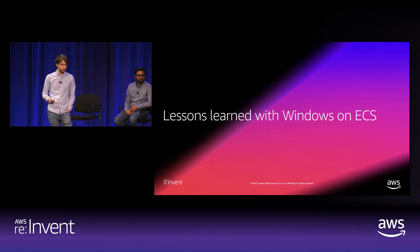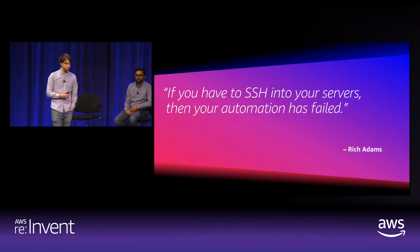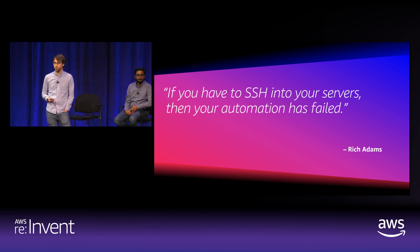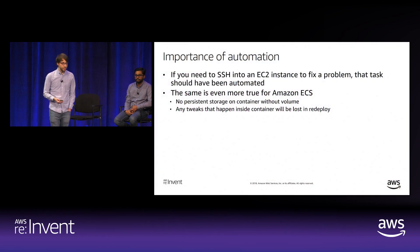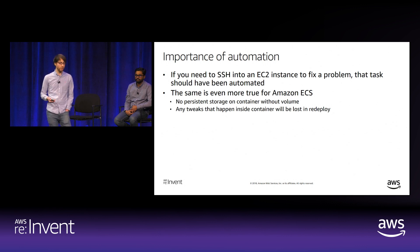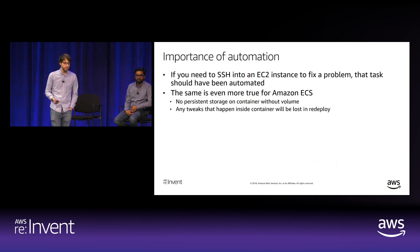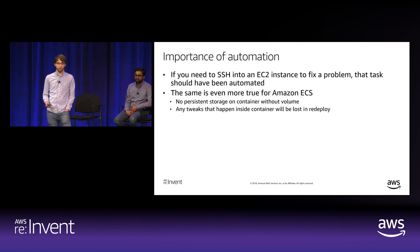Lessons learned from working with Windows on Amazon ECS. A quote from Rich Adams' blog post 'AWS Tips I Wish I'd Known Before I Started': 'If you have to SSH into your servers, then your automation has failed.' If you SSH into an EC2 instance to fix a problem, that task probably should have been automated. This is even more true for Amazon ECS: there's no persistent storage for containers unless you mount a volume, so any tweaks you make are lost on redeploy. Treat containers like cattle, not pets—automate everything.